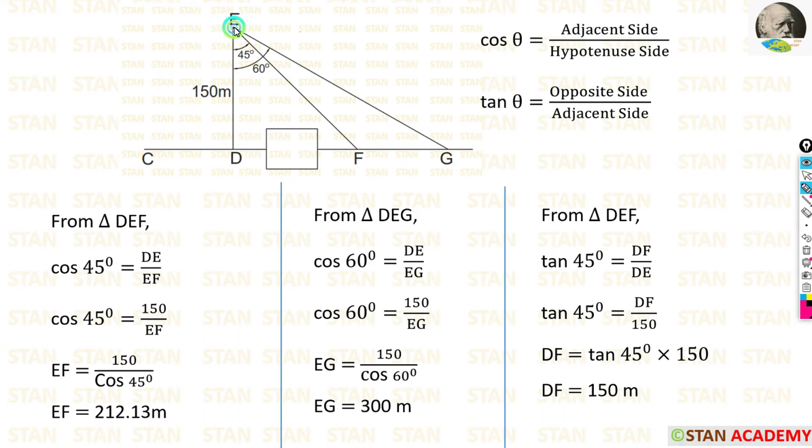First I am going to calculate the length of EF. For that I am going to take the triangle DEF. In this triangle we can apply the cosine formula. We know that cos θ equals adjacent side by hypotenuse side. In the triangle DEF, for 45 degrees the adjacent side is DE and hypotenuse side is EF. So cos 45° = DE/EF. We already know the value of DE, that is 150 meters. We can take the EF on the left side and cos 45° on the right side. Finally we are getting EF equals 212.13 meters.